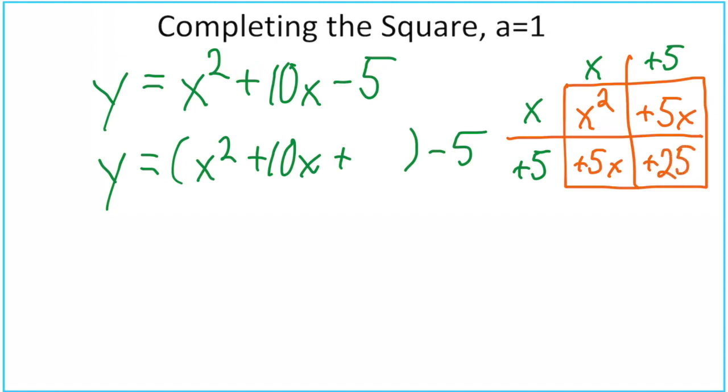And that is referred to as completing the square. Now our plus 25 goes in this blank spot. Now technically, we've just done something to our equation. So we have to fix that. So we fixed that by doing the opposite of what we just did. So we just went plus 25.